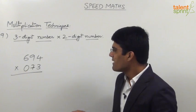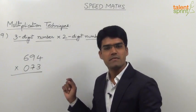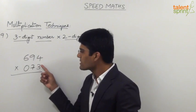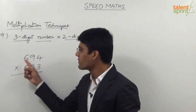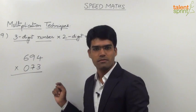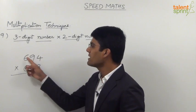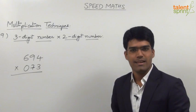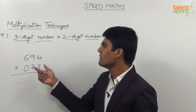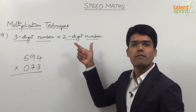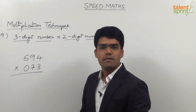That is: first we multiply the units places, then cross multiplication of units with tens, then cross multiplication of units and hundreds and multiplication of tens places. The fourth step is cross multiplication of tens with hundreds, and the fifth step is multiplication of hundreds places. This same procedure for three-digit multiplication can be applied when multiplying a three-digit number with a two-digit number by placing a zero in front of the two-digit number.